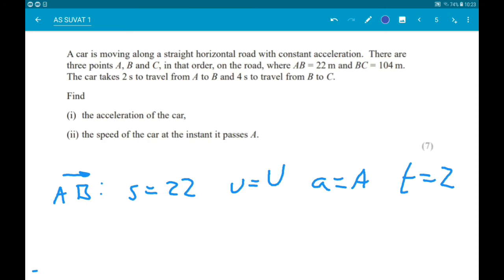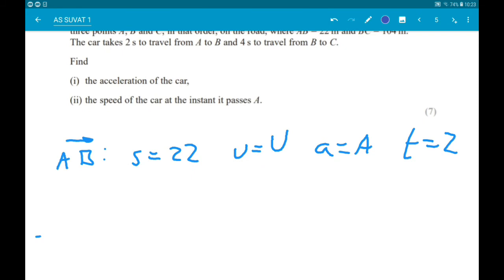So the way we're going to do that is think about the whole journey, A to C. For A to C then, we know the displacement is 22 add 104, so that's 126. U is again U. A is again A. And this time T is 6. For each of these, we can now use S equals UT add one-half AT squared.